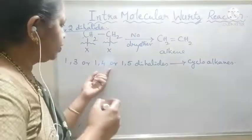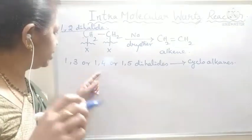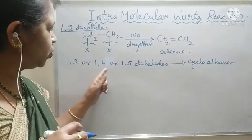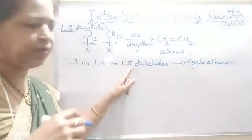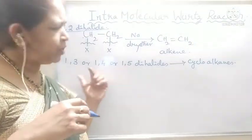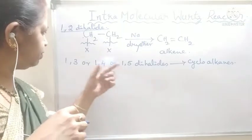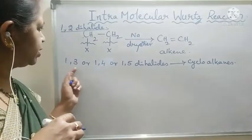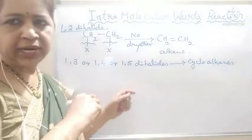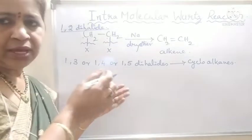If we take terminal dihalides — terminal dihalides may be 1,3, 1,4, or 1,5. That means if we increase the number of carbon atoms, they will result in 1,3, 1,4, or 1,5 dihalides. Let us see what they give.